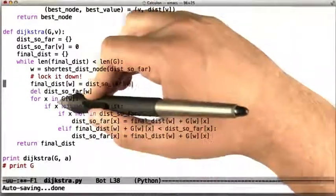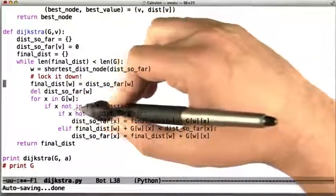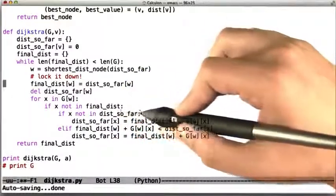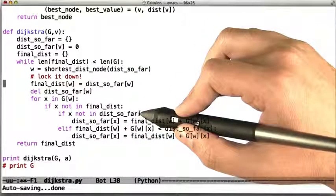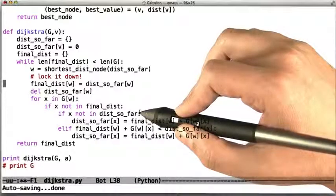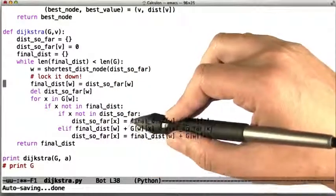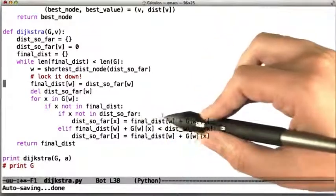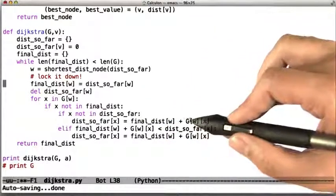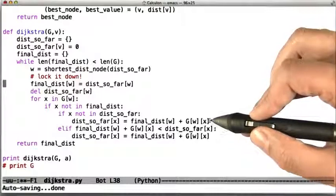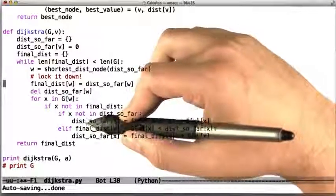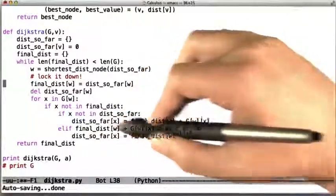So all of the neighbors of w in the graph, call them x, and for each one we'll say if we haven't already completely solved that node, if we've completely solved that neighbor then we don't have to do anything, but if we haven't, then see if it has a distance so far, and if it doesn't, then give it one by saying our best guess is the distance is going to be the distance that it took to get to w plus the distance from w to x.